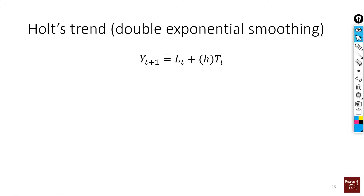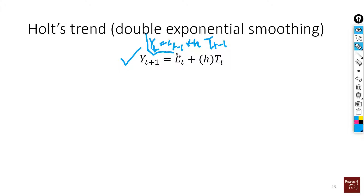The main equation is: ŷ(t+1) = L(t) + h·T(t). One change is that we now refer to the forecast value as ŷ(t+1) instead of ŷ(t), but it means the same thing. Presenting it this way makes the calculation easier when dealing with double exponential smoothing.